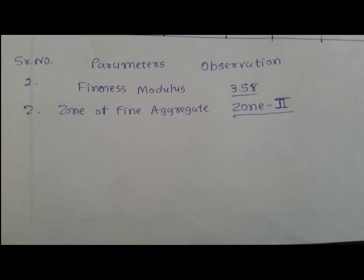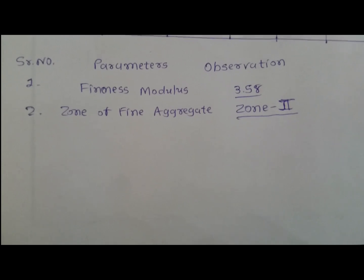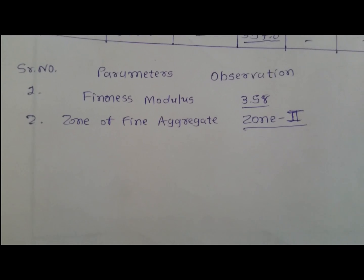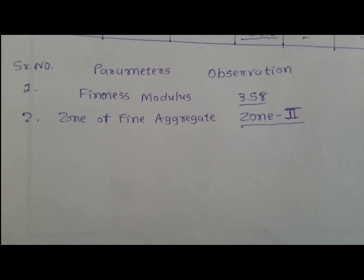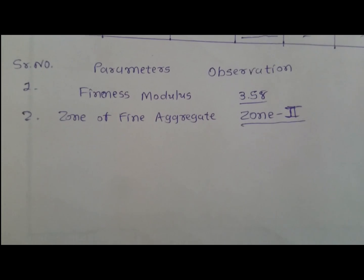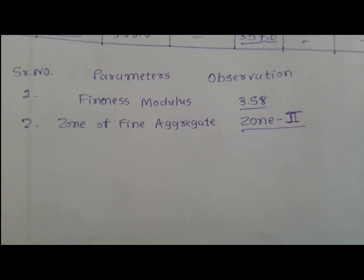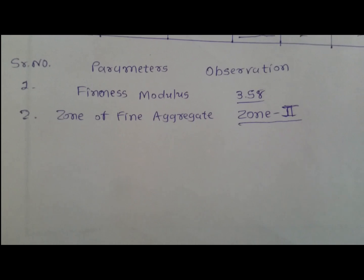The fineness modulus is 3.58, and our result is matched with Zone 2. So the zone of the fine aggregate sample we are taking for the test is Zone 2.